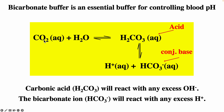When carbon dioxide reacts with water, we can form carbonic acid. If carbonic acid loses its hydrogen ion, it forms the bicarbonate. So carbonic acid and bicarbonate can form a buffer solution. This buffer is actually essential for controlling blood pH.